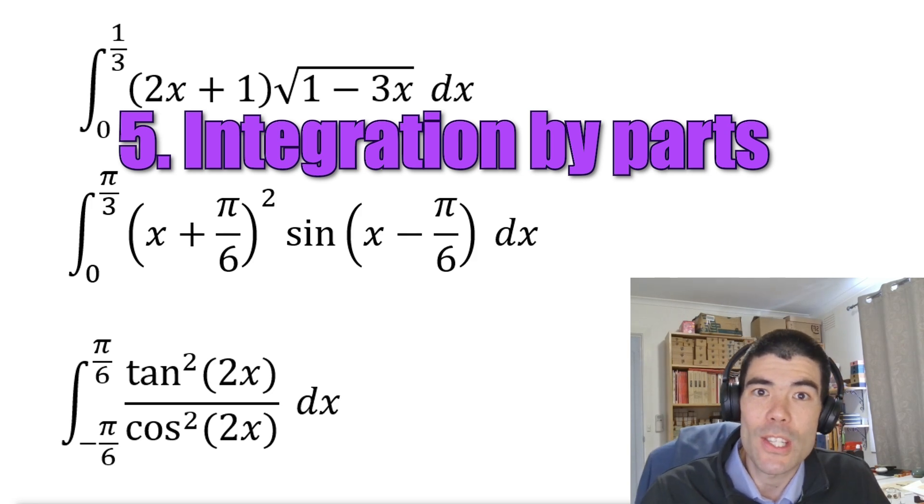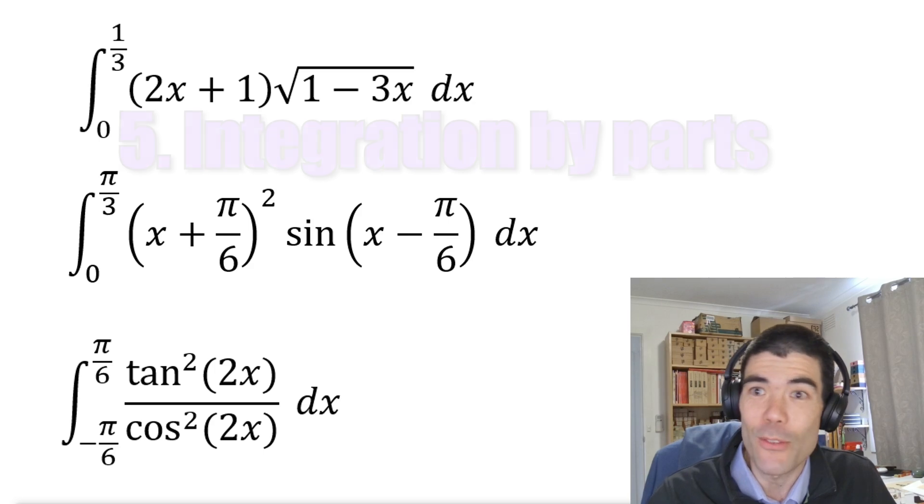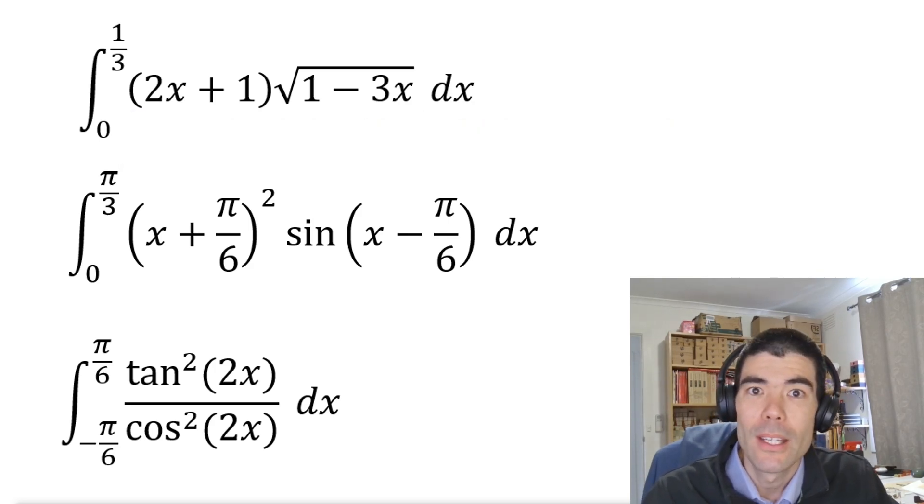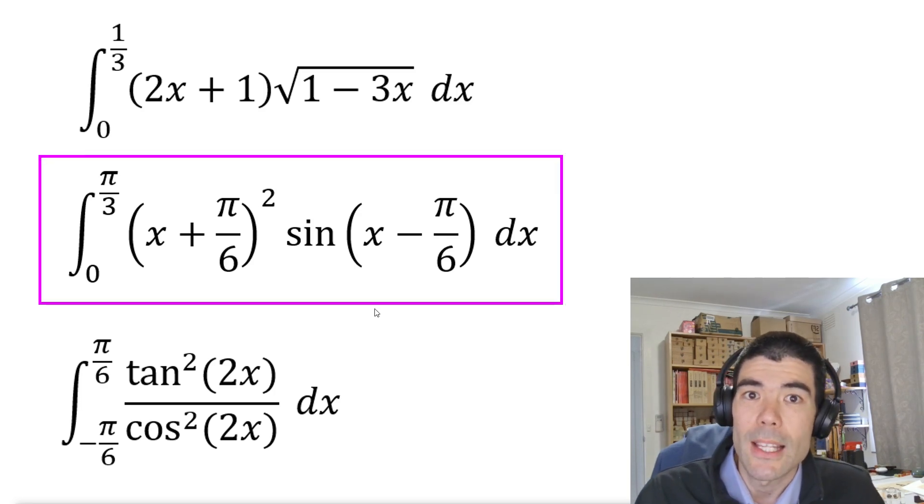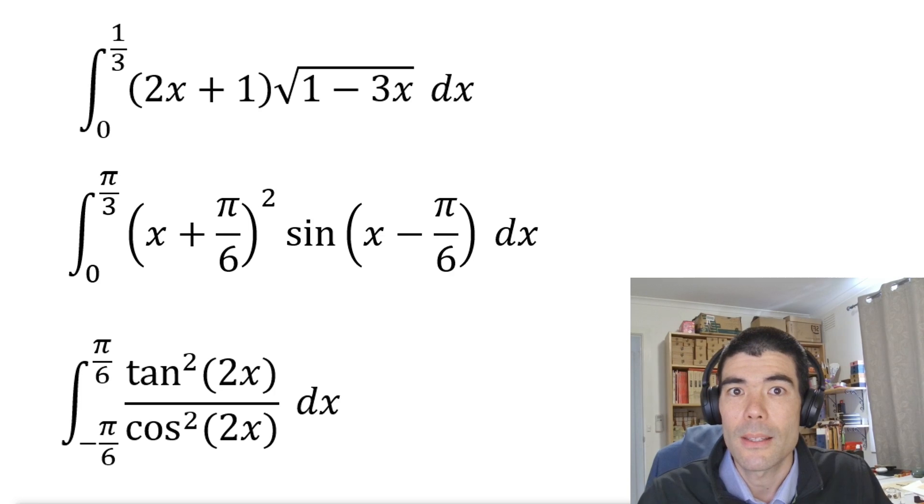Key skill number five is integration by parts. Again, new in 2023. And the exam writers have shown that they really like putting these on exam one. If you have a look at these three integrals, think which one would be suitable for using integration by parts. This one is easiest to do with the linear substitution, u = 1 - 3x. The third one, do with the u substitution, u = tan 2x. The second one is a good candidate for integration by parts.